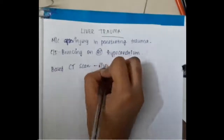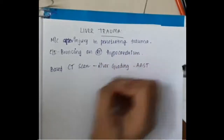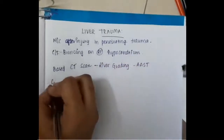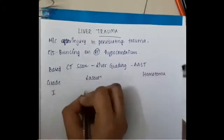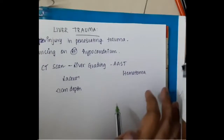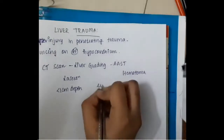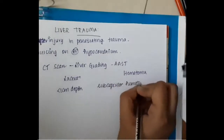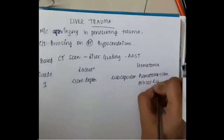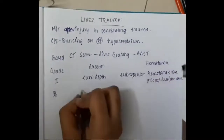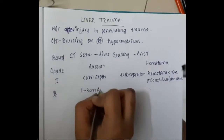Liver trauma grading is based on CT scan. We have six grades of liver trauma which depend on laceration and hematoma. In Grade 1, the depth of laceration is less than one centimeter and subcapsular hematoma is less than one centimeter or less than ten percent of surface area.